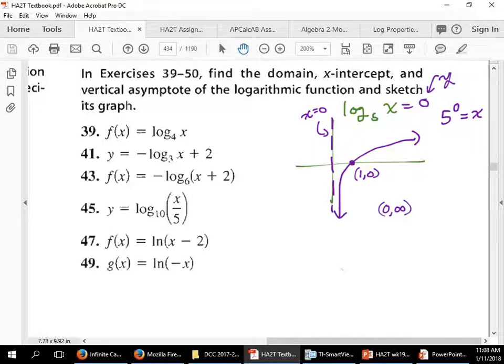So the vertical asymptote is determined by a horizontal shift. So if it was 43, we have a plus 2 right here. That means it shifts to the left 2. So then this is going to be from negative 2 to infinity instead of zero to infinity.